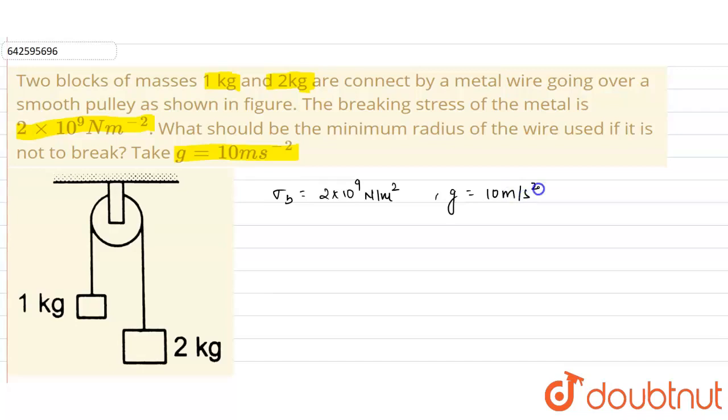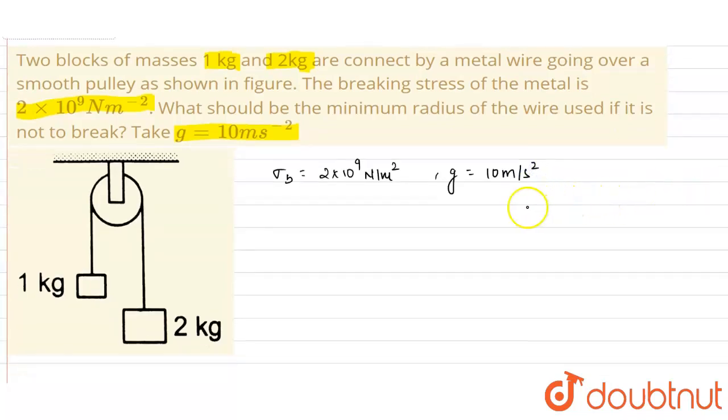First of all, let's see what will happen here. The weight of the block of mass 1 kg will act in downward direction and it will be 10 newtons, and on the mass of 2 kg the weight will act as 20 newtons.